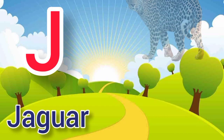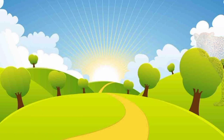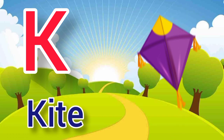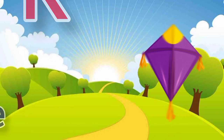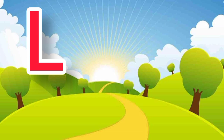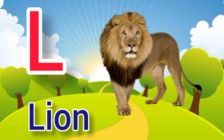J. J for jaguar, jaguar means tendu. K. K for kite, kite means patang. L. L for lion, lion means sher.